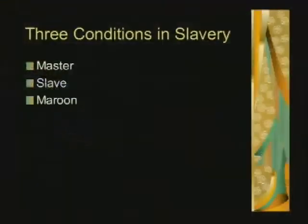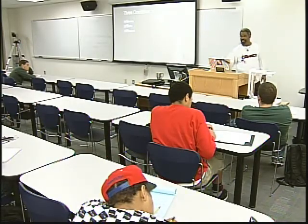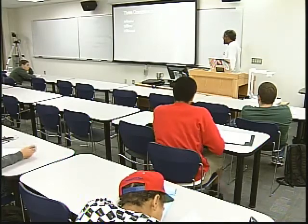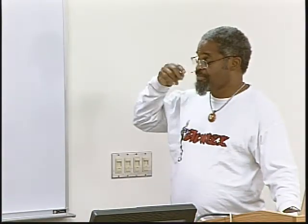There are three conditions: master, slave, and maroon. Masters have an economic system that depends on free or reduced labor to maintain their control; they have to find a population to enslave and maintain a slave population through indoctrination or miseducation. A maroon is a person who could have been a slave but also could be free. The film Sankofa basically talks about maroon societies outside of slavery, coming from a different orientation.